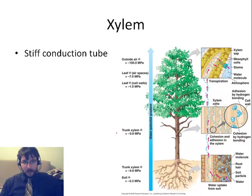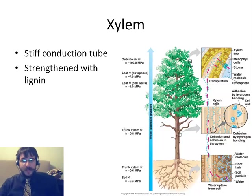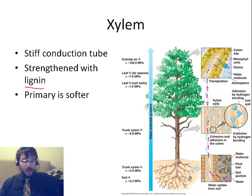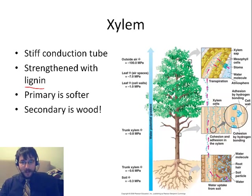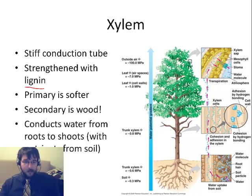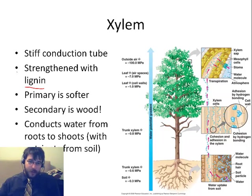There is xylem. This is very stiff conductive tissue, strengthened with a protein called lignin. It's very, very strong — we're talking about a very stiff, lignified plant. There's primary xylem, which is kind of soft. Secondary xylem is actually wood — the chairs you're sitting in are made out of secondary xylem. Xylem conducts water from roots to shoots.